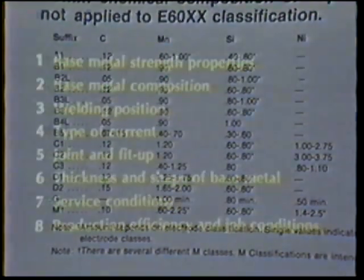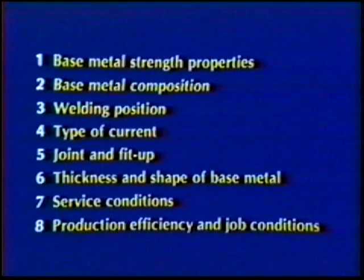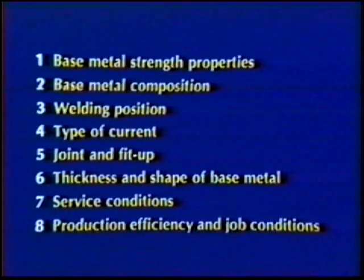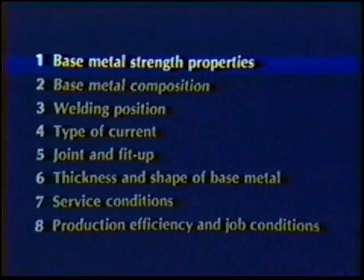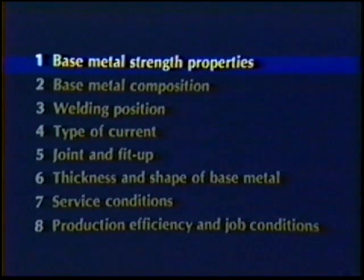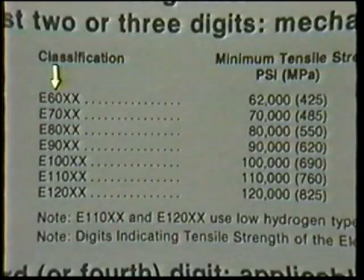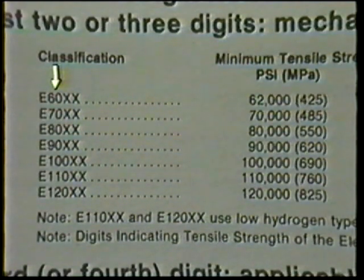As stated earlier, the selection of the proper electrode depends on eight key points that relate to the characteristics of each electrode type. The first point is base metal strength properties. This must be known in order to select a compatible filler metal. As a general rule, any E60 type electrode is sufficient because its filler metal will overmatch most mechanical properties. If the steel is low alloy, refer to the first three digits of the electrode classification and select the one that most closely matches the tensile strength of the base metal.